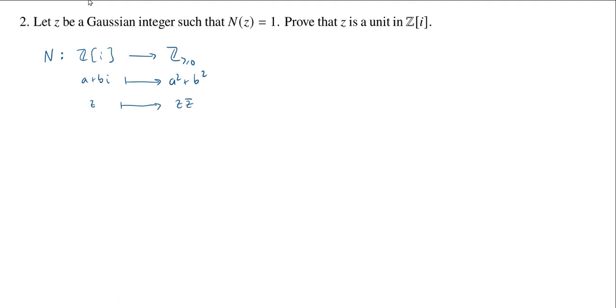So either one works. In our case, we're assuming that we have some Gaussian integer z such that N(z) equals 1. I'm going to show you two different proofs that z is a unit. The first is the one that I expect most people will go to. The second is, I think, the more elegant proof.